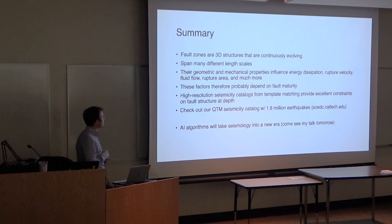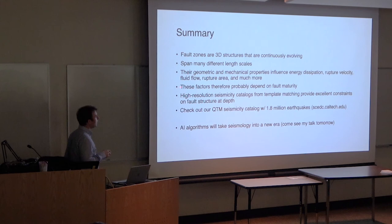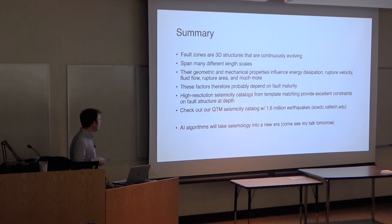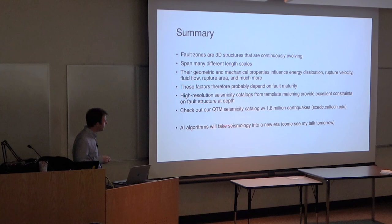In summary: fault zones are very three-dimensional, continuously evolving, and span different length scales. Their geometric and mechanical properties influence energy dissipation, rupture velocity, fluid flow dimensions, and many other things. These factors probably depend on the current state - how mature the fault is. High-resolution seismicity catalogs from template matching provide excellent constraints on fault structure at depth. Our catalog with 1.8 million earthquakes is available through the Southern California Earthquake Data Center. The future of this field lies with artificial intelligence algorithms that will overcome the limitations we've experienced. Thank you.